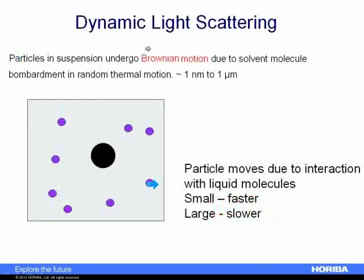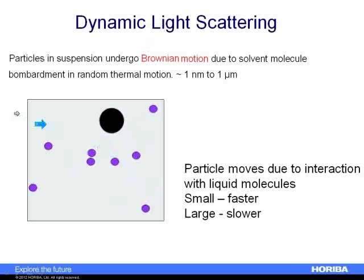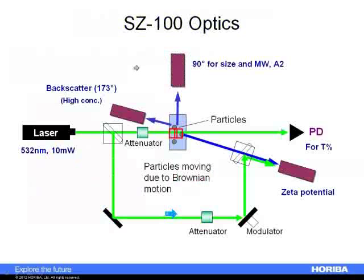The SZ100 is a system based on dynamic light scattering. This particle moves due to its interaction with the liquid molecules it's dispersed in. We measure that Brownian motion, and from the Brownian motion we can calculate the particle size. Dynamic light scattering is good for measuring from about a nanometer to a micron, depending on the density of the particle. Small particles diffuse more quickly than large particles. By looking at the scattered light from this diffusion due to Brownian motion, we can calculate the particle size.